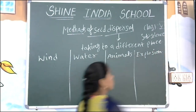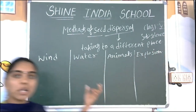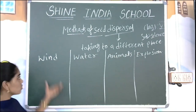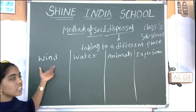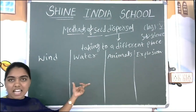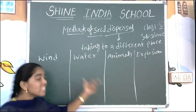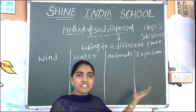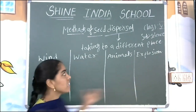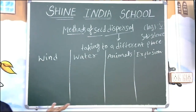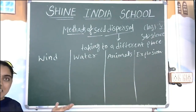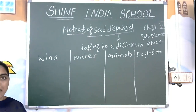How many types of methods are there? We are having four types of methods. First one is wind, second one is water, third one is animals, and fourth one is explosion. These are the four methods of seed dispersal. We will go in detail with each and every topic.